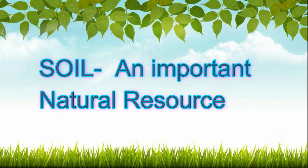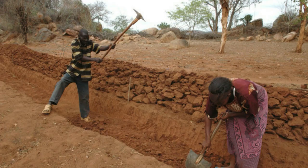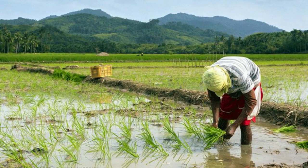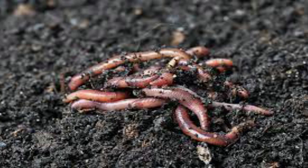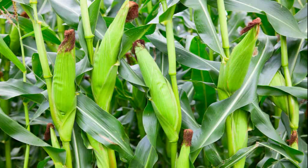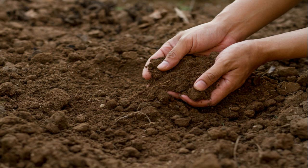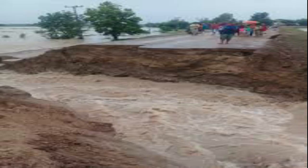Soil is a very important natural resource on Earth. It is very useful to plants, animals, and humans. Some animals, like earthworms and ants, live in the soil because there is air in the spaces between soil particles. People plant crops like rice and corn in the soil. These crops are sources of food. Crops can be grown on the same land again and again for years if the soil is properly taken care of. If the soil is washed away, it will take hundreds and hundreds of years before it can be replaced. It cannot be replaced easily.